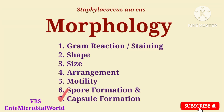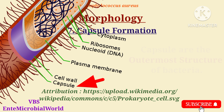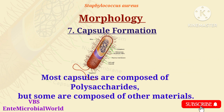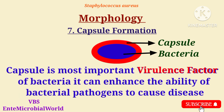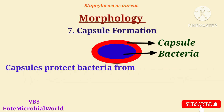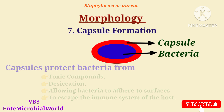Next is capsule formation. Capsules are the outermost structure of bacteria. Most capsules are composed of polysaccharides, but some are composed of other materials. The capsule is the most important virulence factor of bacteria. It can enhance the ability of bacterial pathogens to cause disease. Capsules protect bacteria from toxic compounds and desiccation, allowing them to adhere to surfaces and escape the immune system of the host.